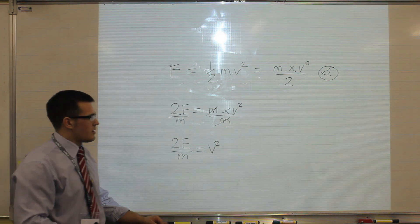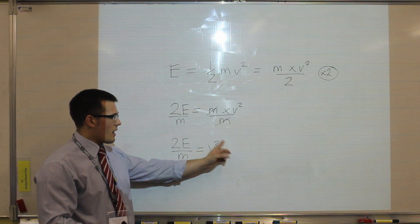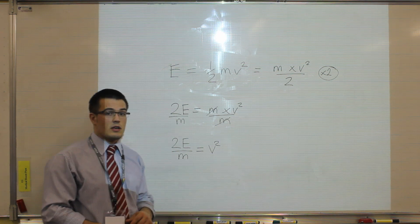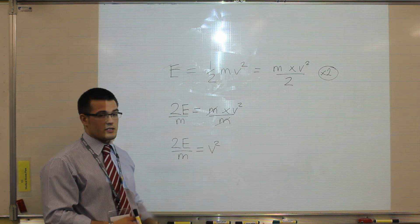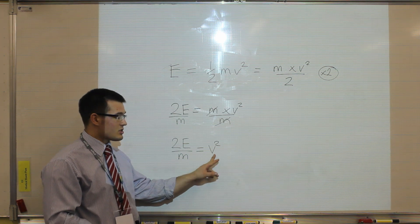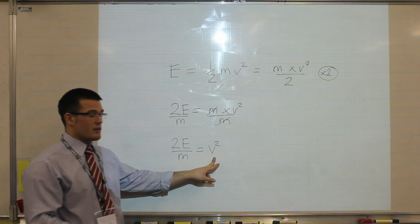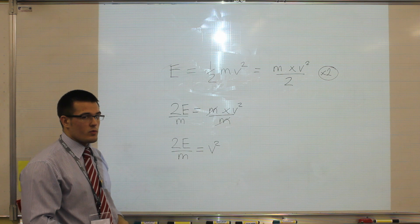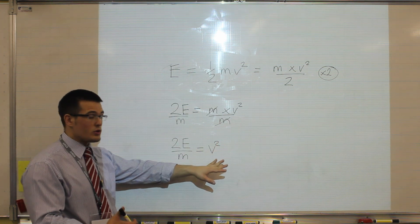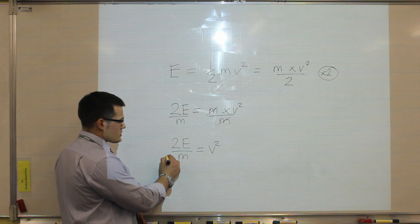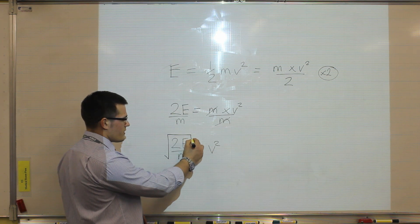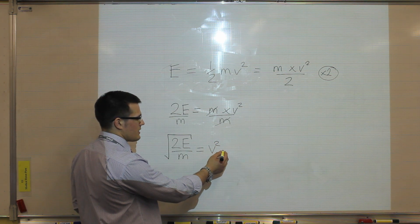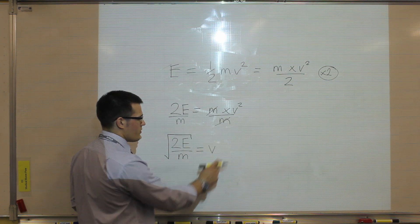The problem this time is that the equation has velocity squared as the subject. If we think of an example — like the square of 6, there's a difference between 6 and the square of 6, which is 36. So at the moment, that isn't actually allowing us to calculate V — it's allowing us to calculate velocity squared. So we have to remove the squared function, and the way we do that is by using a square root. I'm going to square root the whole of this side of the equation, and that will cancel out the squared, so that we are left with just velocity.